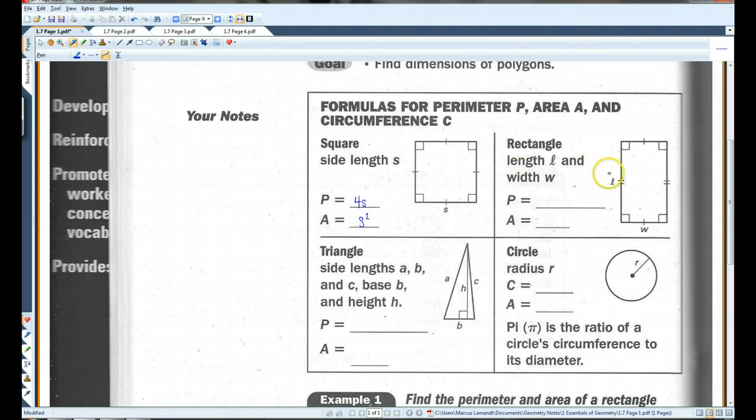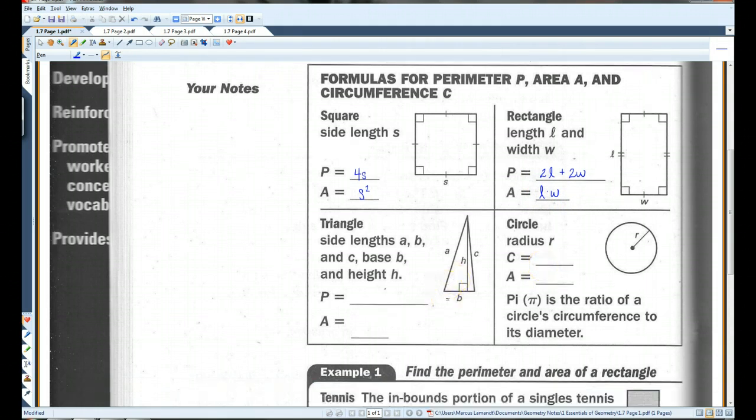Alright, now, if you have a rectangle, the perimeter is just going to be 2 times the length plus 2 times the width. And the area would be length times width. Alright, now, with a triangle, the perimeter is pretty much the same as the square and the rectangle. You're just going to be adding all the sides together.